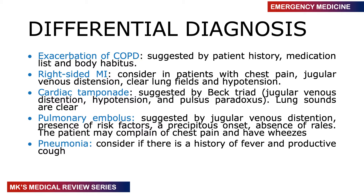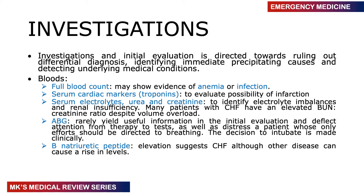Differential diagnosis includes COPD exacerbation, suggested by a strong history, medications, and body habitus — remember blue bloaters versus pink puffers. Consider right-sided myocardial infarction in patients with chest pain, jugular venous distension, clear lung fields, and hypotension. Cardiac tamponade will present with Beck's triad: JVD, hypotension, and pulsus paradoxus with clear lung fields. Pulmonary embolism is nonspecific but includes JVD, risk factors, pleuritic chest pain, and possible wheezing. Pneumonia presents with fever and productive cough.